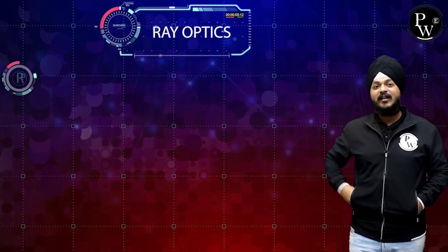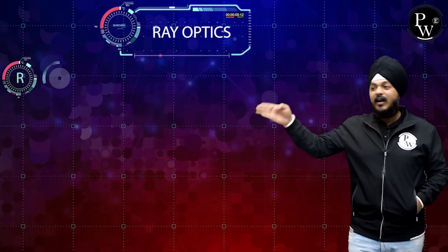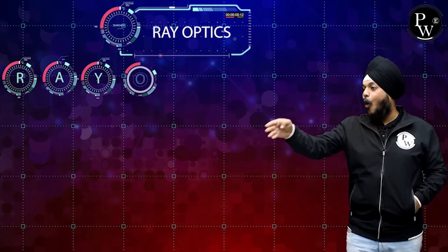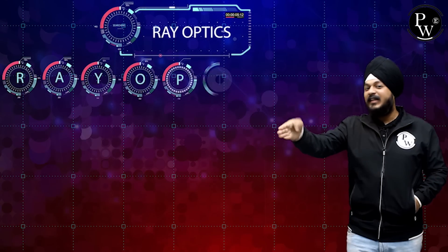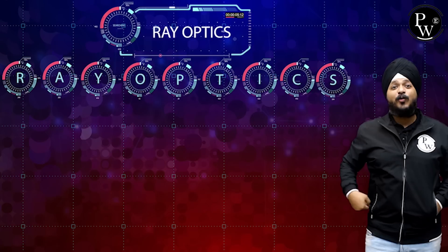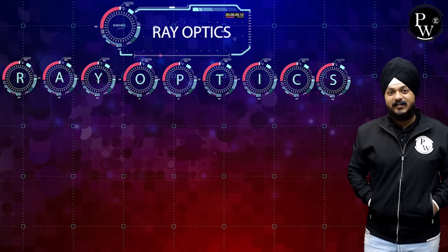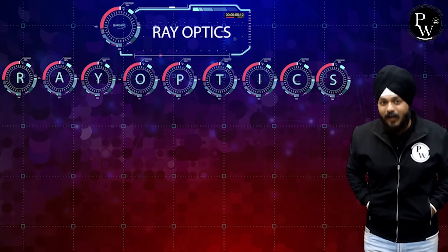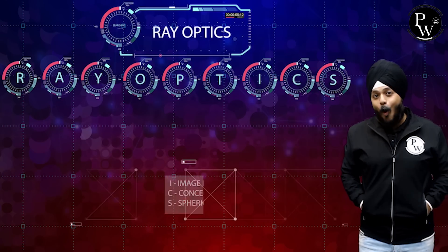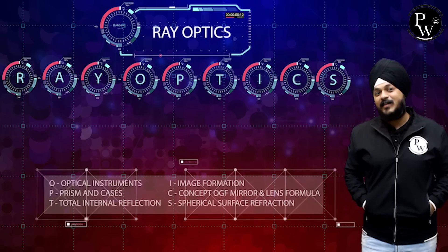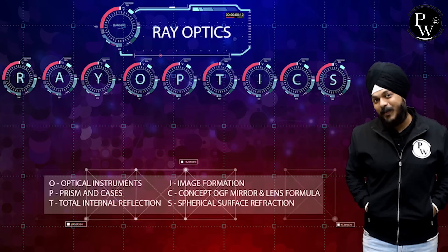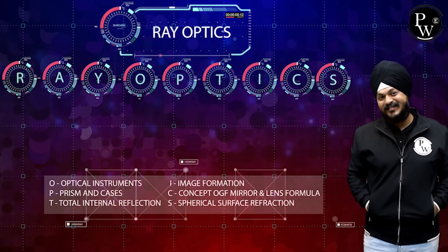Using this technique, we have the initials R, A, Y, O, P, T, I, C, S — Ray Optics. O stands for optical instruments. T stands for refraction at a spherical surface concept.